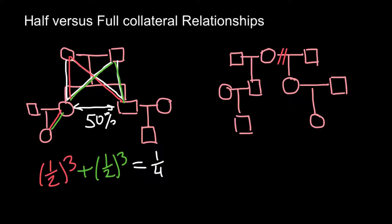One-half to the power of three is one-eighth, plus one-eighth gives us one-quarter. So niece and uncle are related by 25% — they share 25% of the genes derived from their common ancestors.